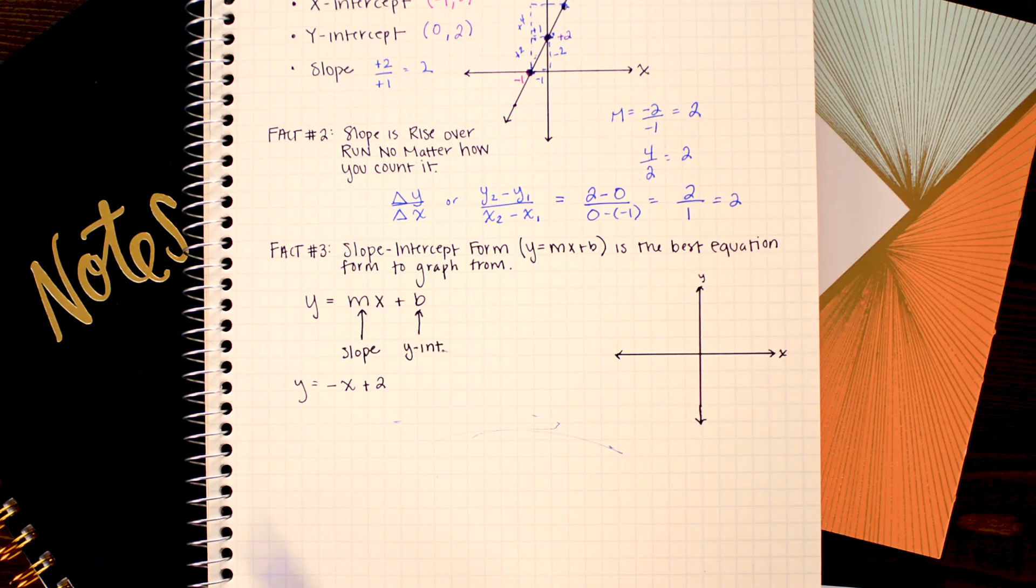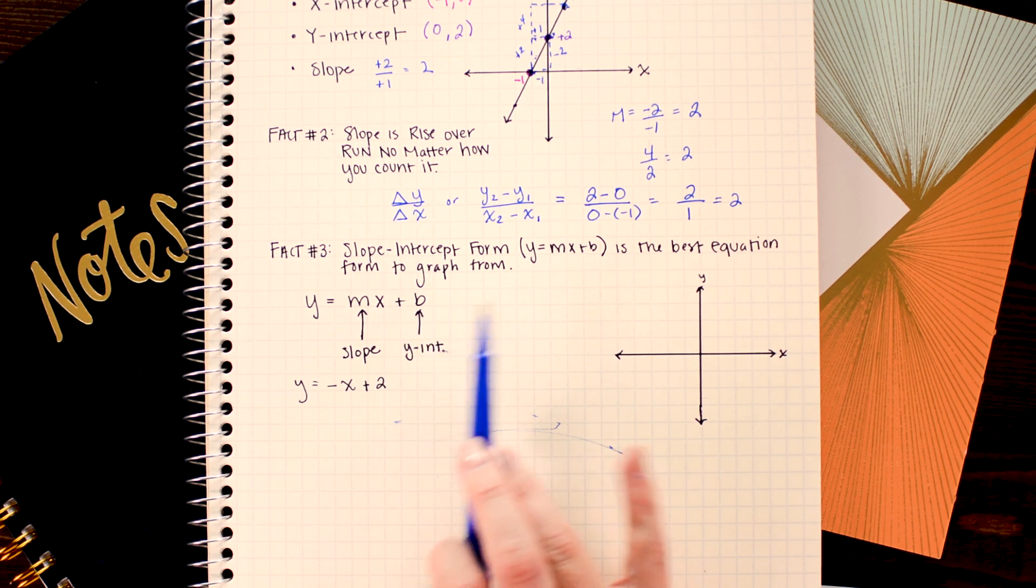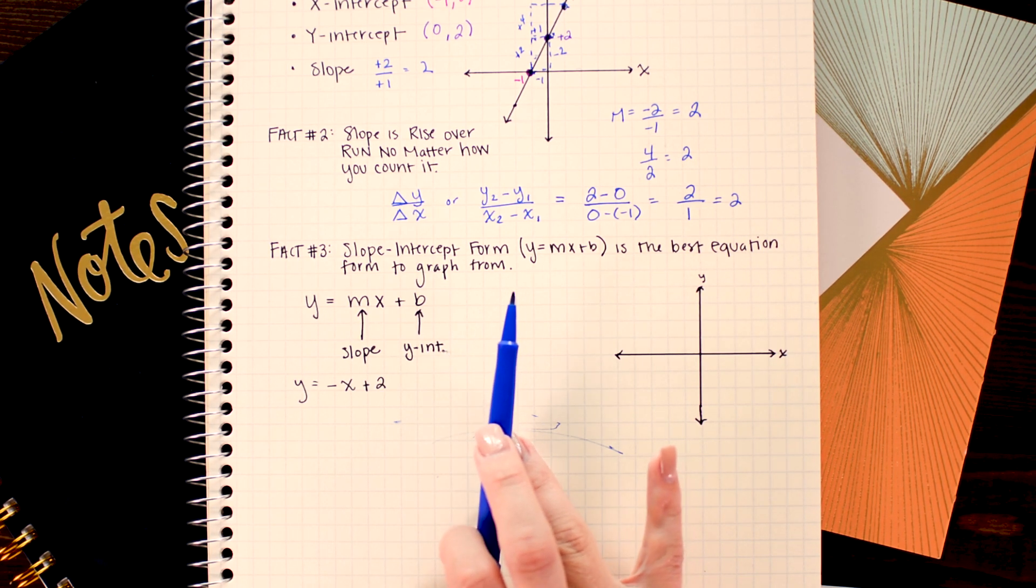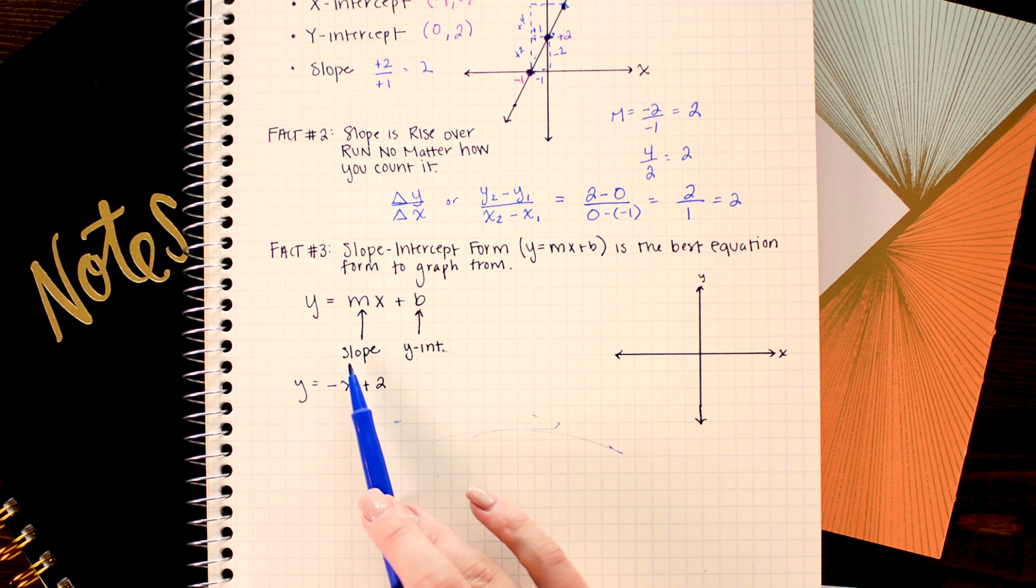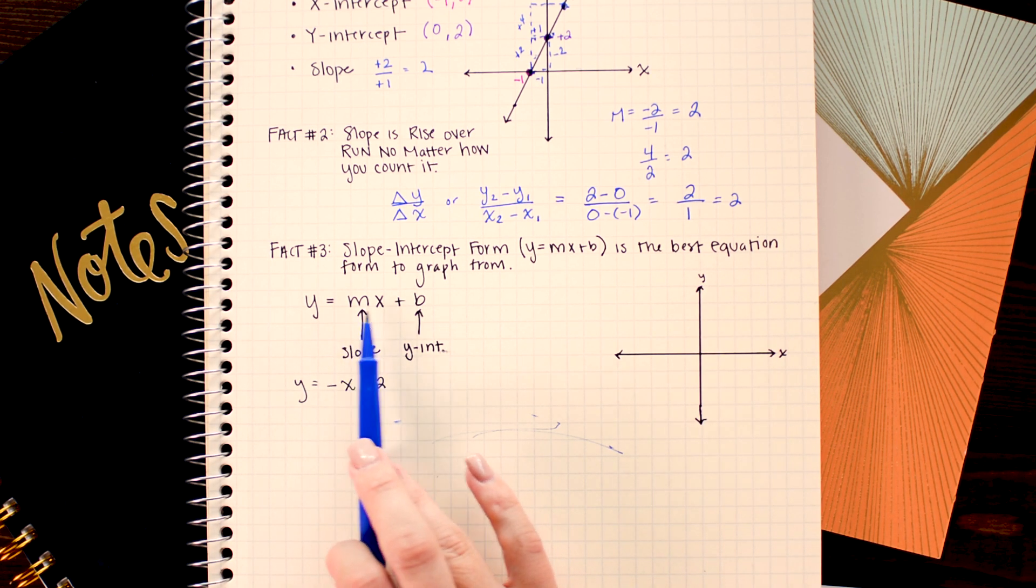The easiest form of a linear equation to graph from is always going to be slope intercept form also known as y equals mx plus b. Slope intercept form is always the best form to graph from because they give you two key pieces of information. They give you the y-intercept here represented by the letter b and the slope which is the coefficient on x here represented as the letter m.